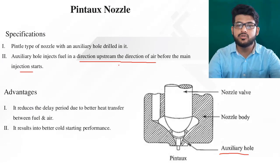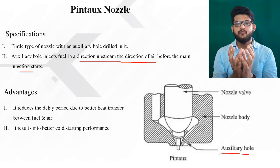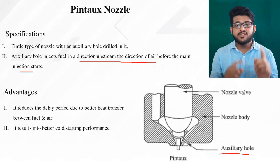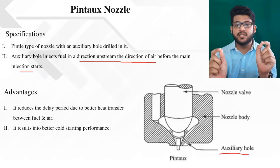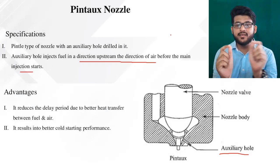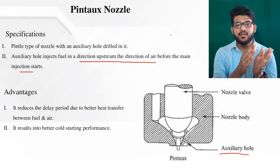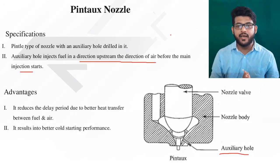The auxiliary hole injects fuel in the direction of the air before the main injection starts, which is used to reduce ignition delay. Ignition delay is the time between when we inject fuel and when fuel ignition happens. When fuel is injected, it goes inside, mixes with air, takes the temperature of the air, and then starts burning — these steps cause the delay. The pintaux nozzle addresses this by pre-injecting fuel before the main injection.